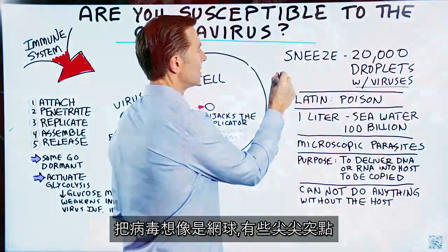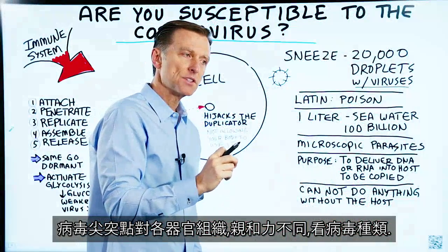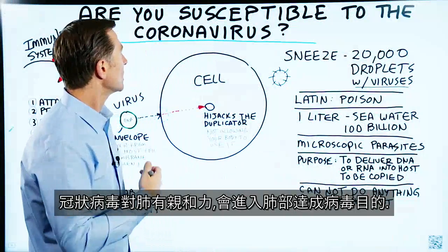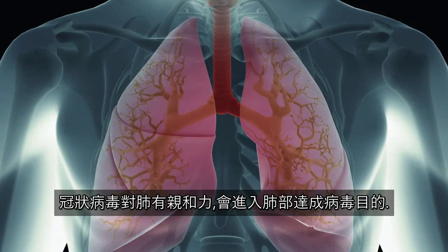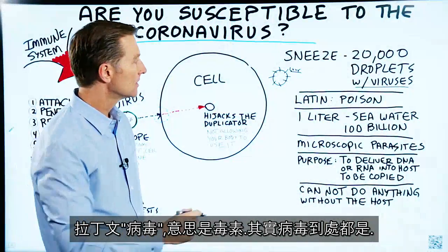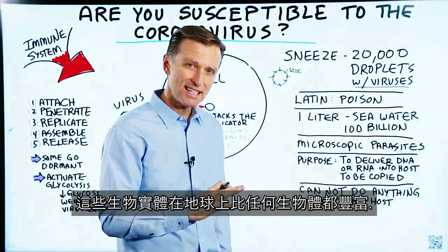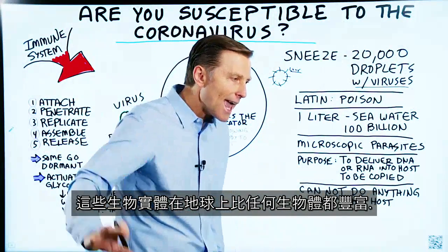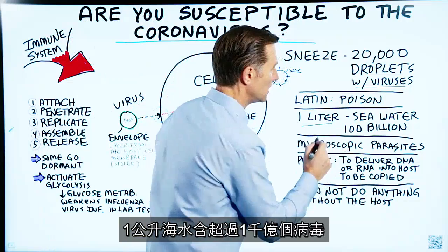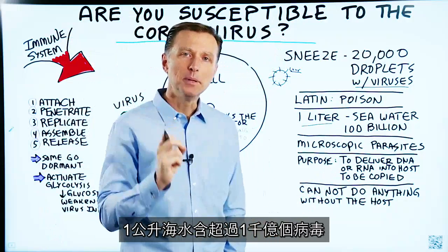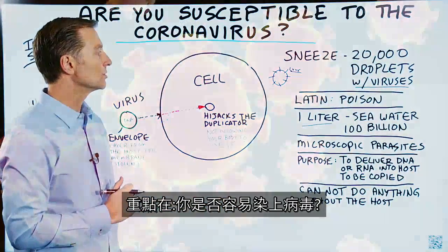Envision the virus like a tennis ball with little spikes. These spikes have affinity for different tissues, depending on what virus it is. The coronavirus has affinity for the lungs, so it's going to go into the lungs and do its damage. The Latin word for virus means poison. Viruses are everywhere — these biological entities are more abundant than any other entity on this planet. Just one liter of seawater contains over 100 billion viruses. So it really comes down to: are you susceptible to the virus?